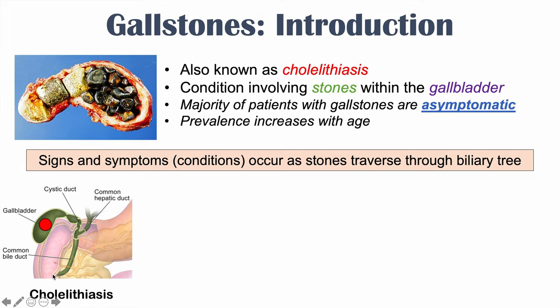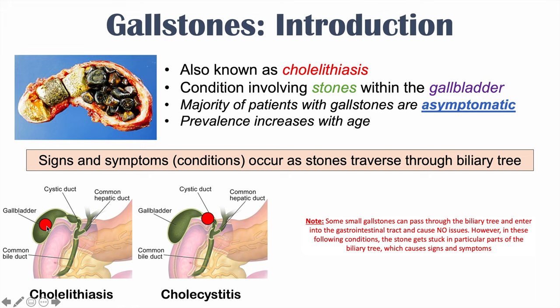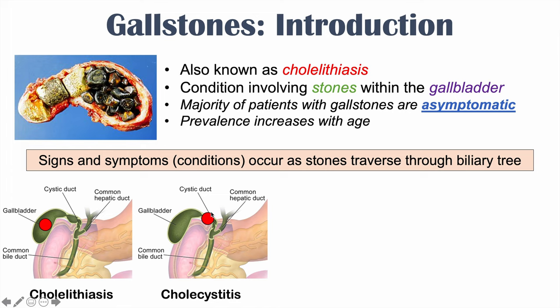In cholelithiasis, stones remain in the gallbladder. We start to get into trouble when these stones begin to move. If a stone moves into the cystic duct, we call this cholecystitis. You can imagine that if there's a stone in the cystic duct and the gallbladder is trying to release bile into the common bile duct and small intestine, it won't be able to do that. This leads to inflammation of the gallbladder — that's what cholecystitis means. 'Itis' meaning inflammation, 'cholecyst' referring to the gallbladder.